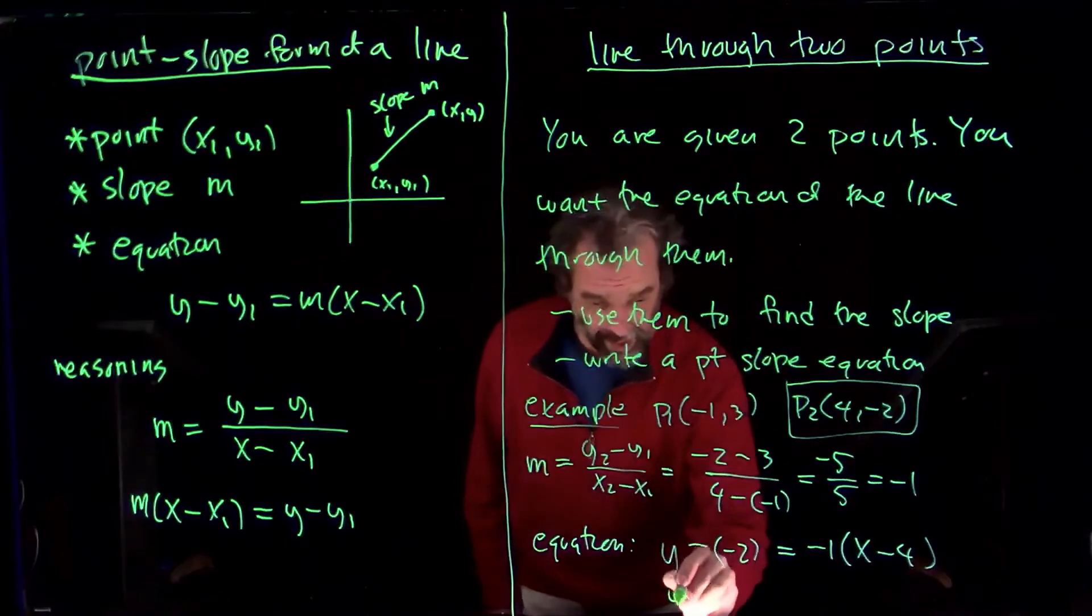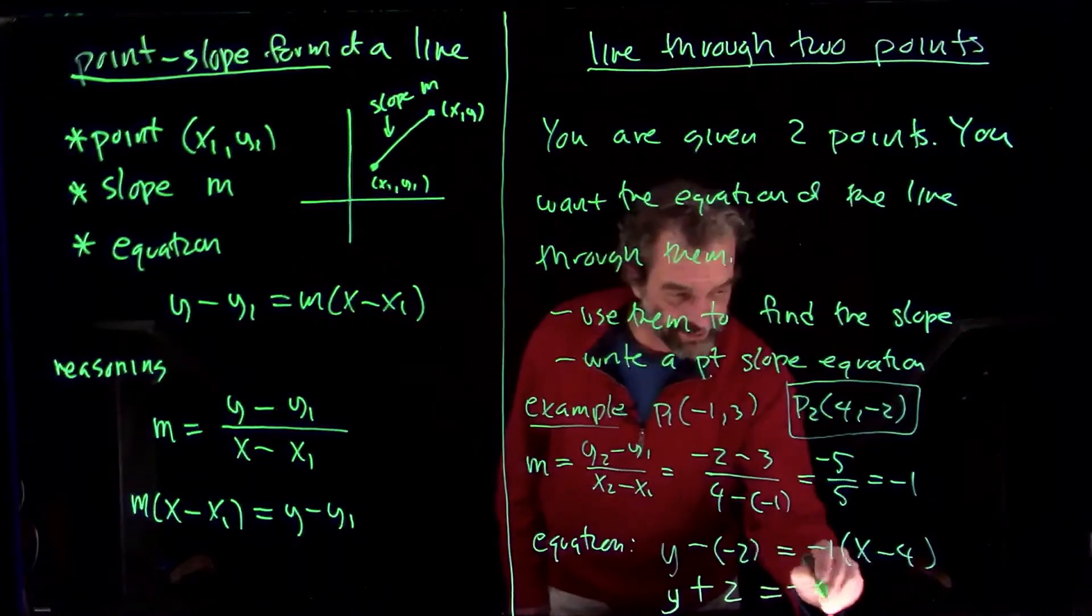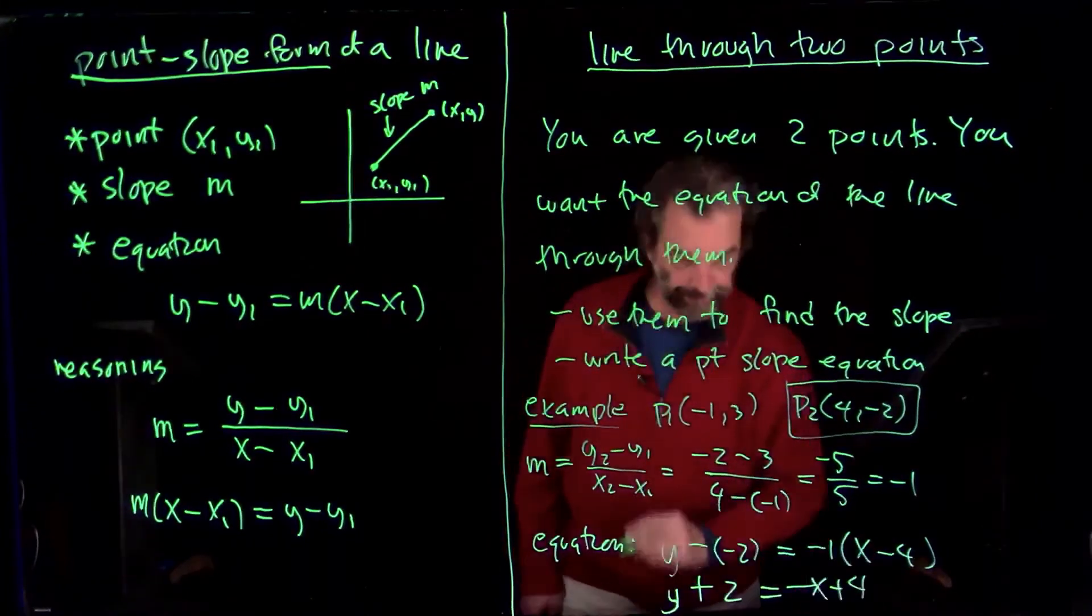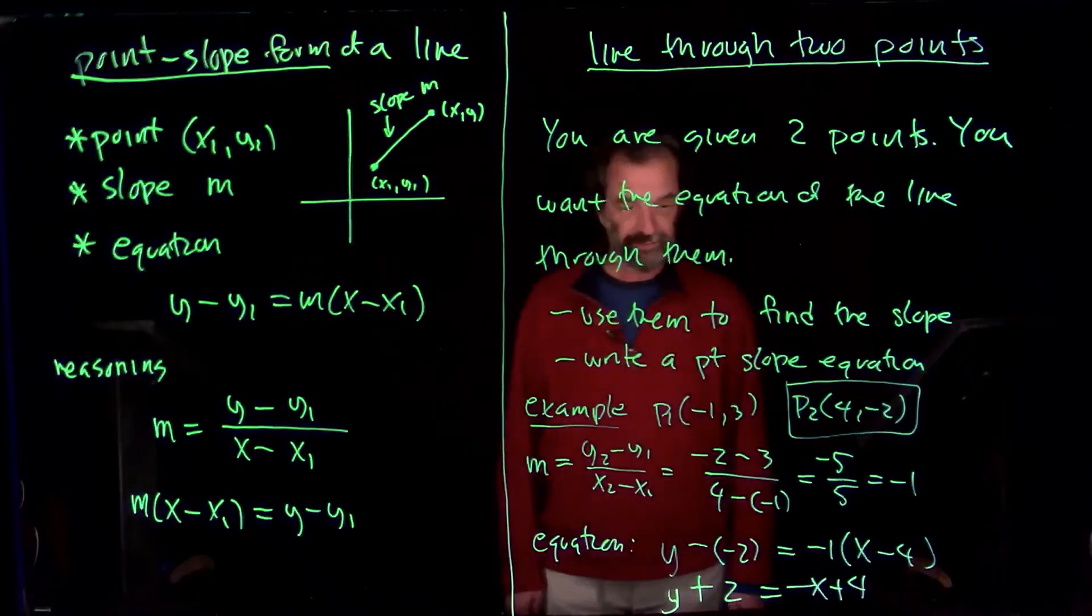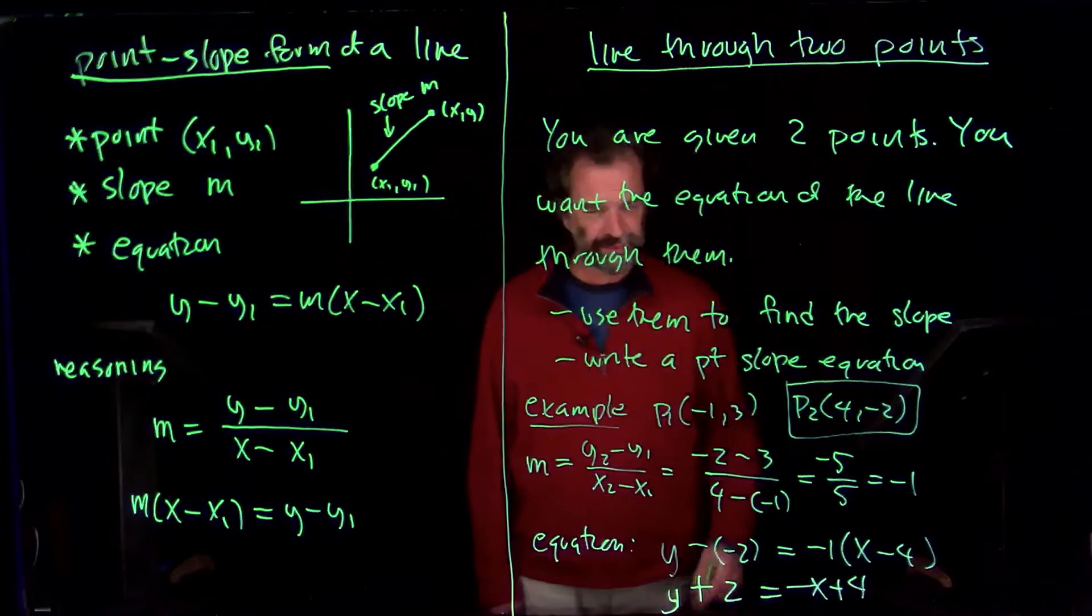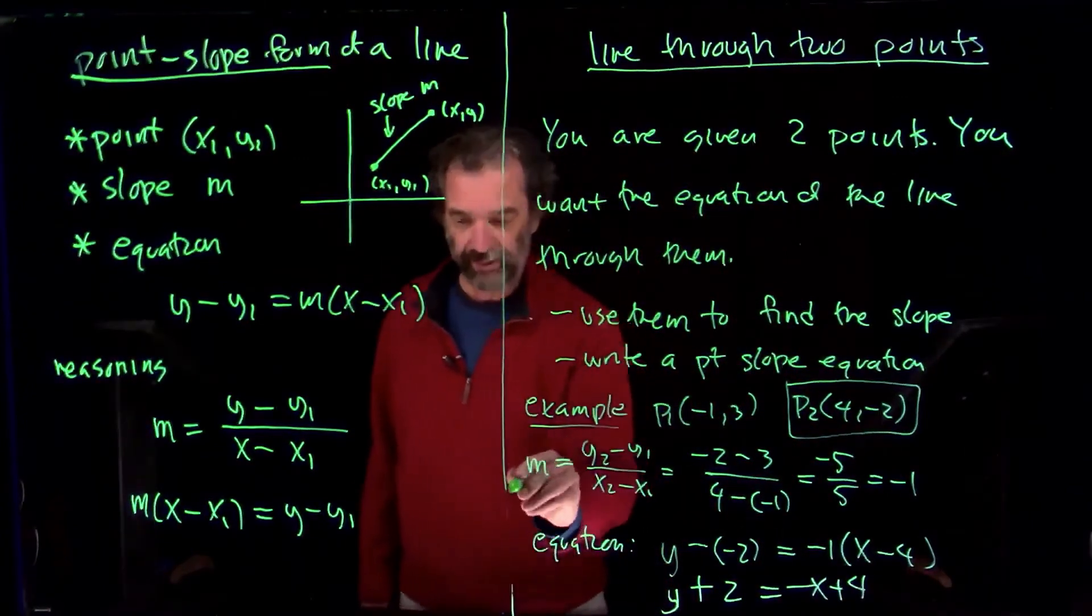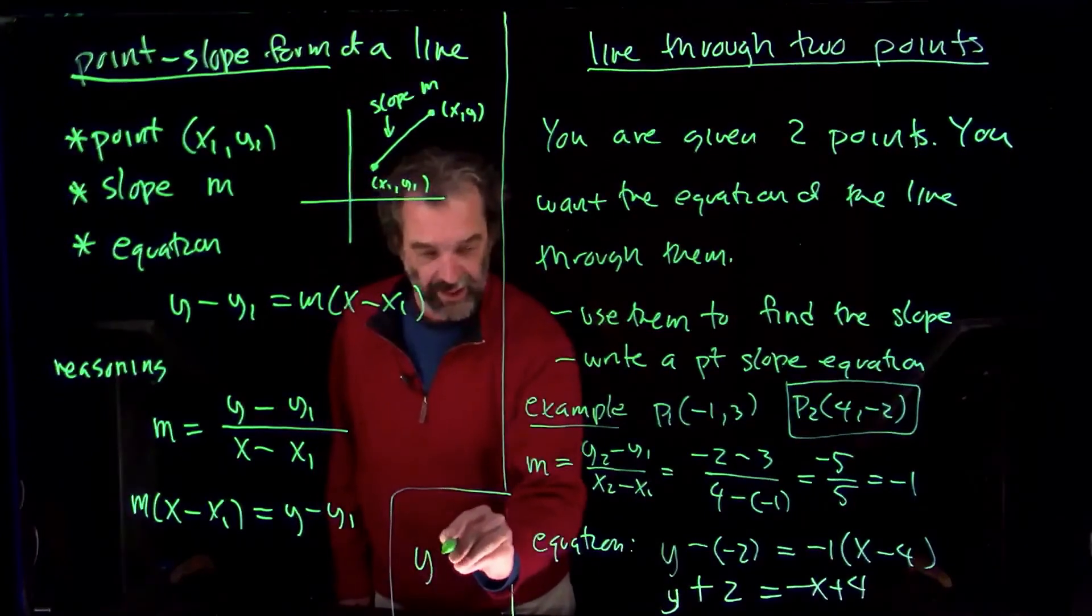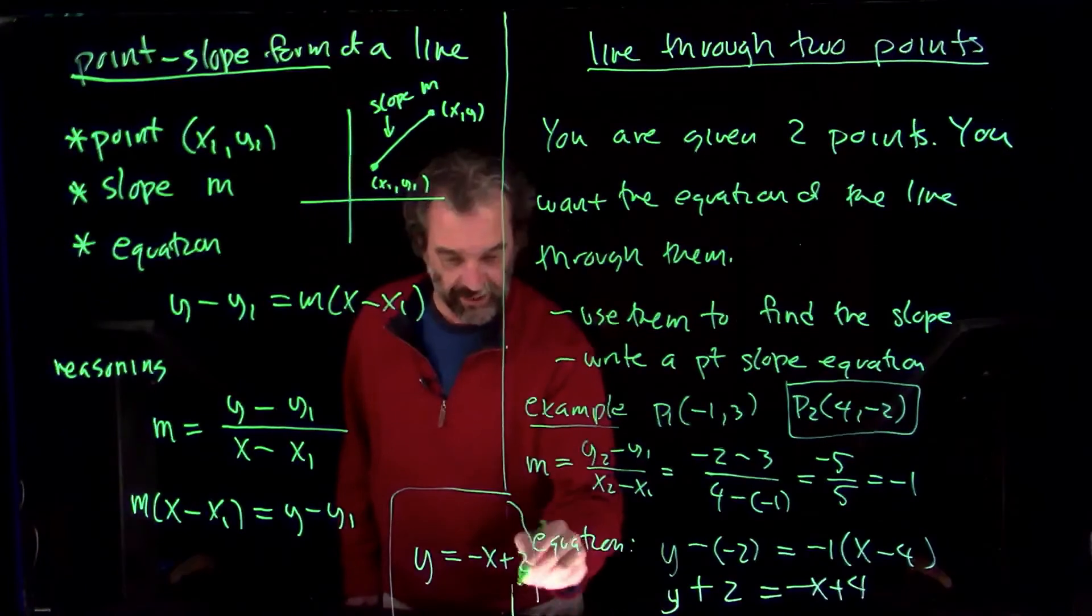So we'll get y plus 2 is -x plus 4. We already had an equation, but maybe we want to put it in slope-intercept form. We'll subtract 2 from both sides right there. Where are we going to put this? I guess I'll slide it over here. Minus 2.